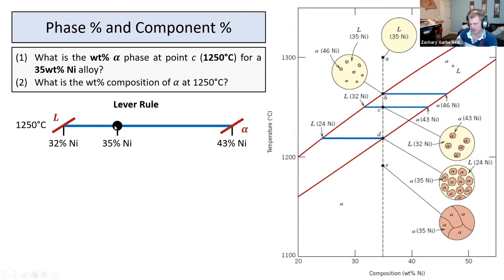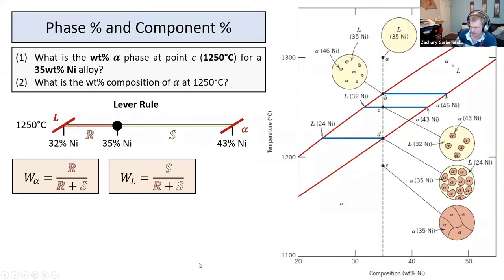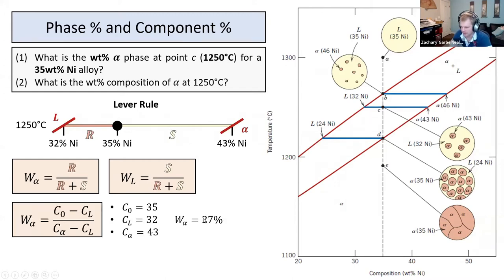Using the lever rule, you look at the fraction length of one side to the total length. For alpha — the solid — the phase boundary of alpha is at 43% nickel. When looking at the phase on the right-hand side, you always look at the lever on the left-hand side. Once you hit the liquidus phase boundary, you should have almost 100% liquid, so it will be the longer lever. We take the length: 35 minus 32, divided by the total length 43 minus 32. That's R divided by R plus S for the alpha phase. For the liquid it's the opposite line. So that's the lever rule — 27% solid alpha.